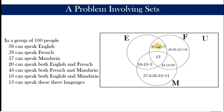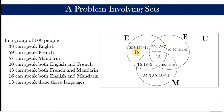Similarly, there should be 9 in the French-only area because 59 people speak French: 7 plus 9 plus 30 plus 13 equals 59. With the same reasoning, the English subset must include 38 people total. With 3, 13, and 7 already placed, we add 15 more to the English-only region.